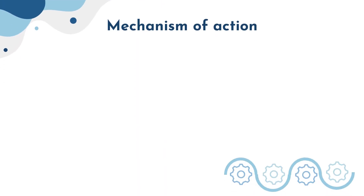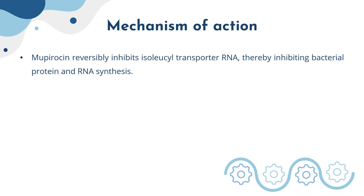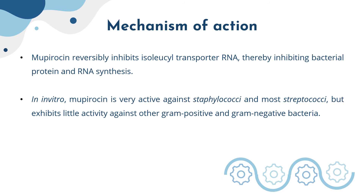Mupirocin has a rather unique antibacterial mechanism. It reversibly inhibits isoleucyl-tRNA synthetase, thereby inhibiting bacterial protein and RNA synthesis. In vitro, mupirocin is very active against staphylococci and most streptococci, but exhibits little activity against other gram-positive and gram-negative bacteria. The drug is for topical use only because of its rapid and intensive systemic metabolism.